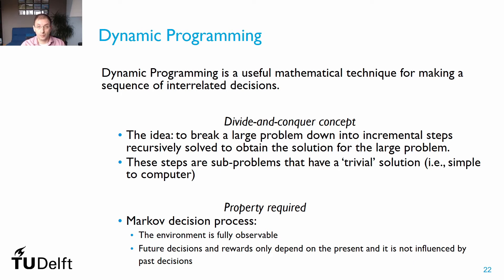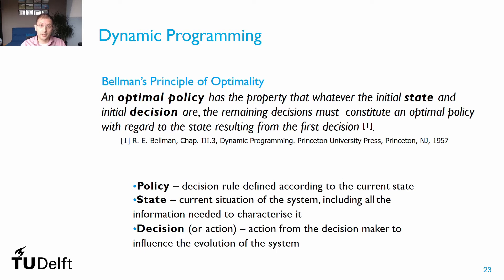This method cannot be applied to all problems. We need to verify that our decision process is Markovian, meaning the environment is fully observable and we know the current state. It also means that future decisions and rewards — costs and benefits — depend only on the current state, not past decisions. If these properties hold, we can follow Bellman's principle of optimality, which states that an optimal policy remains optimal regardless of the initial state and decision made.